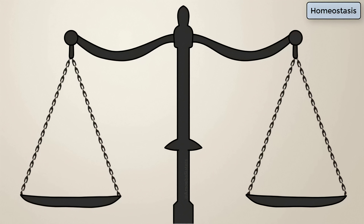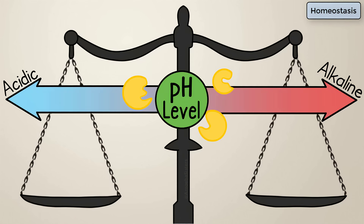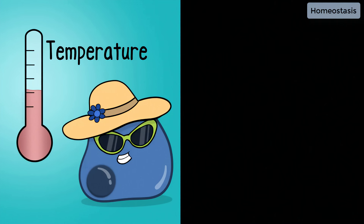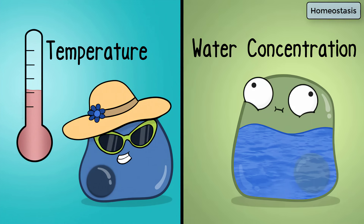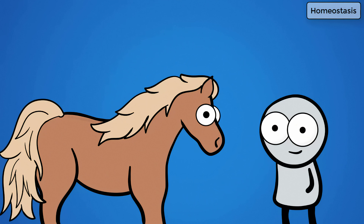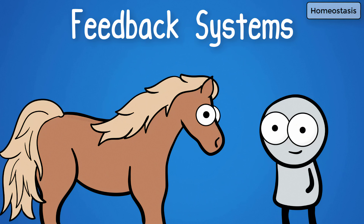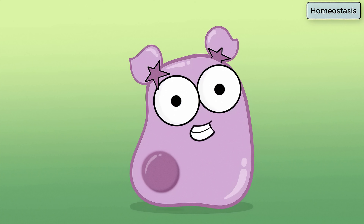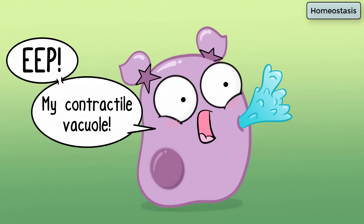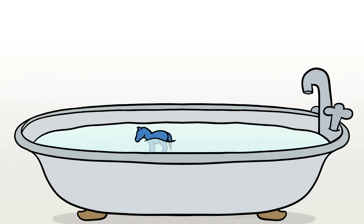Homeostasis. Maintaining a regulated balance is so important for many biological processes to even happen. For example, enzymes typically need a certain pH range to work correctly. Maintaining homeostasis can mean maintaining a certain temperature and a certain percentage of water concentration. Ponies and your human body have all kinds of feedback systems in place to maintain homeostasis. But even a single-celled organism, like an amoeba, relies on its cell membrane to maintain homeostasis internally. Living organisms have regulation of homeostasis, which is not going on in Bathtub-Grown Pony.